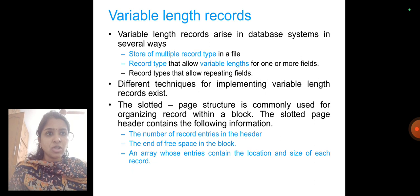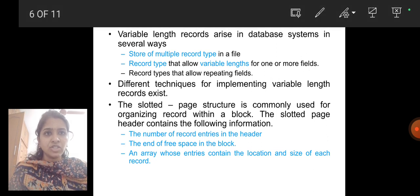The slotted page structure is commonly used for organizing records within a block. The slotted page header contains the following information: the number of record entries in the header, the end of free space in the block, and an array whose entries contain the location and size of each record.